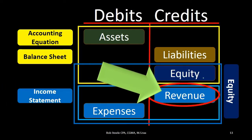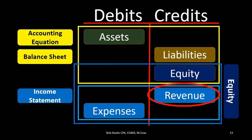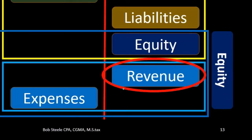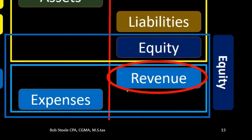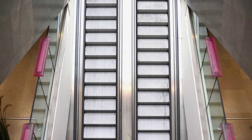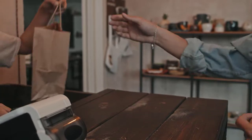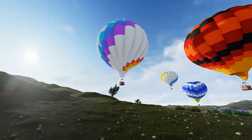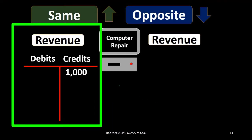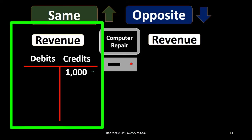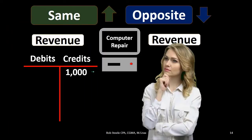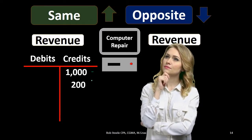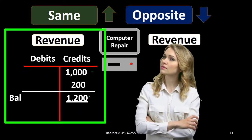Now we'll focus on revenue. Remember that revenue is a component of equity, but when we consider revenue by itself, it will always be a credit balance. Revenue and expenses have a special component in that they typically only go up — customers only pay us, we don't pay customers. Applying our one rule: if revenue has a credit balance and we want to make it go up — for example, we made a sale — we do the same thing as its normal balance, a credit, increasing it by $200 and bringing the ending balance to $1,200.